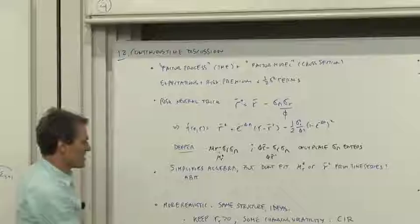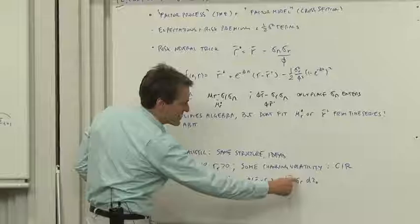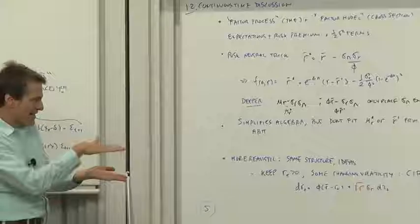One of the classic models that does that is the Cox, Ingersoll, and Ross model, and it does it with one little modification. We add a sigma, a root r in front of sigma r, so that as the interest rate gets low, it gets less and less volatile.